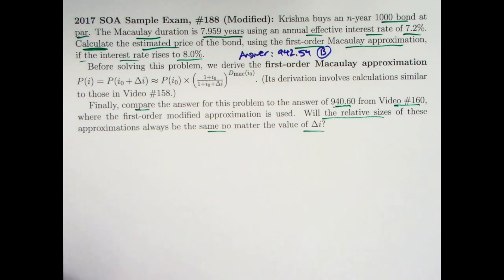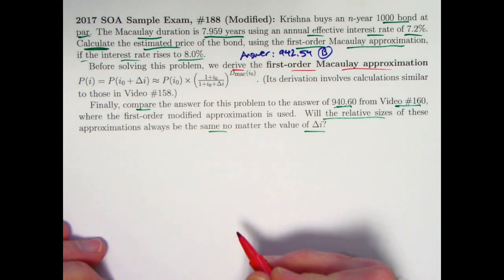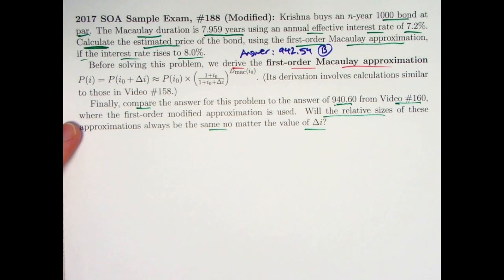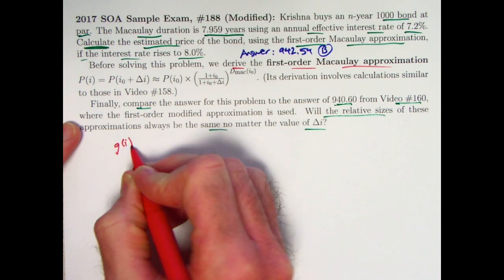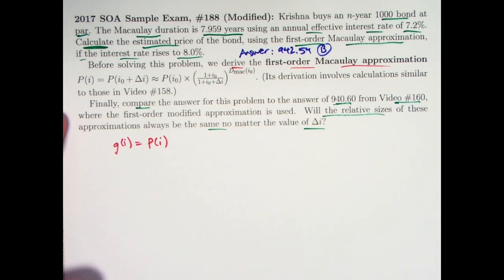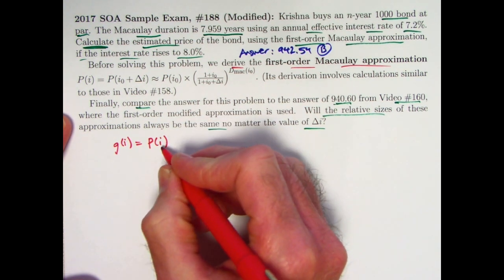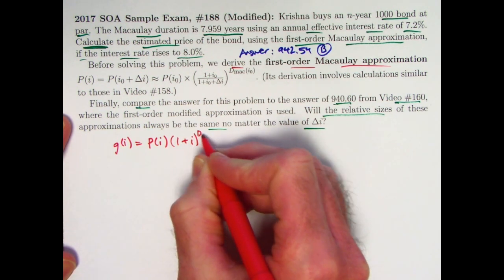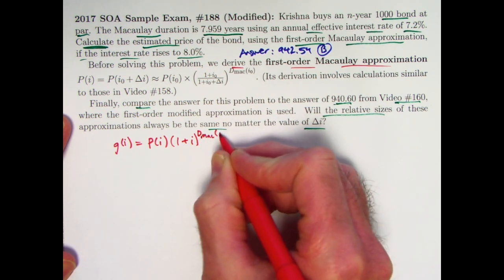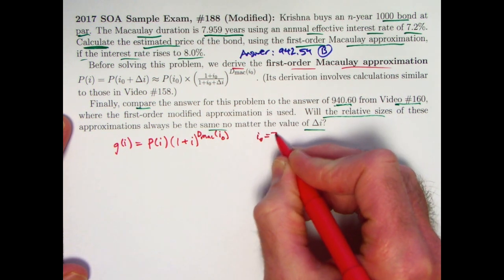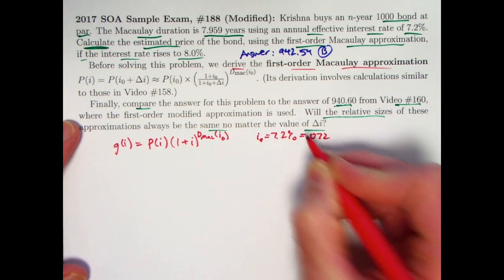Let's start by deriving this First Order Macaulay Approximation. It's tricky, and if you've never seen the derivation it would be very difficult to figure out on your own. The key thing is to define a new function g(i) to be the price of the bond at an arbitrary yield rate i, based on the given coupon payments and redemption amount, accumulated forward in time by the Macaulay Duration d_MAC years with respect to the given interest rate i₀. So i₀ represents 7.2% in this problem, but it could be something else in a different problem.